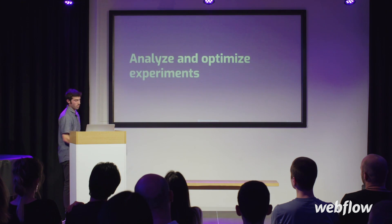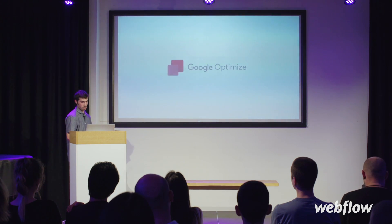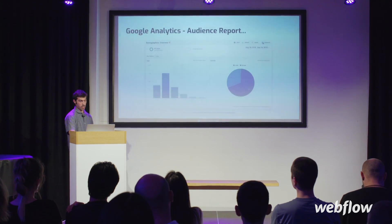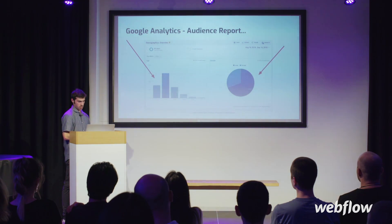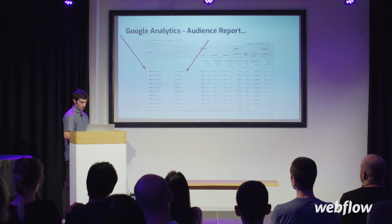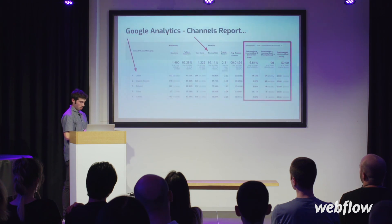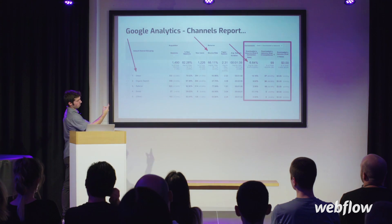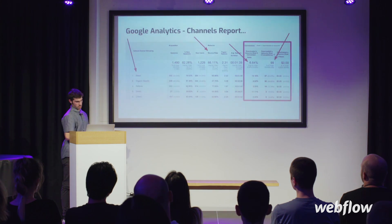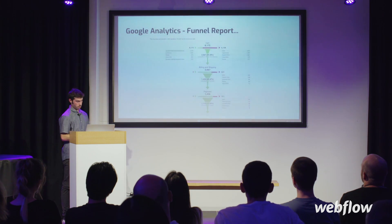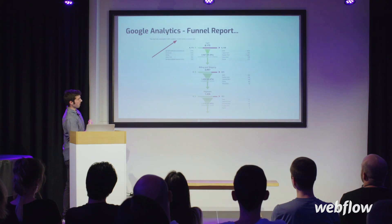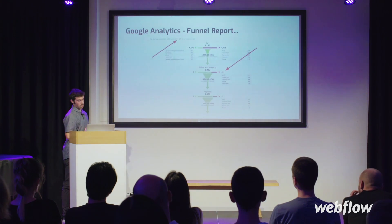After setting up the customer journey, we want to analyze and optimize those experiments using Google Analytics and Google Optimize. We review the audience report — age, gender, country, city — and the channels report to determine where traffic came from, what the bounce rate was, and what the conversion rate was. We use Google Optimize to create a funnel showing where users come in, what the conversion rate is, where they drop off, and how to optimize that part of the funnel.